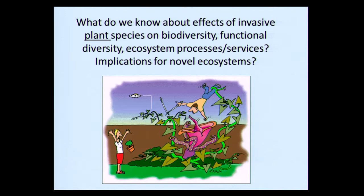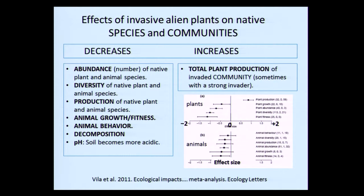I want to talk now about the effect of invasive plant species on biodiversity and implications for novel ecosystems. Studies show that as alien plants increase, we have decreases in the abundance and diversity of native plant and animal species, decreases in animal growth and fitness, changes in animal behavior, and decomposition may decrease with soil becoming more acidic. However, total primary production may increase, often due to one dominant invader that grows aggressively and produces more biomass. These results come from meta-analyses looking at dozens to hundreds of studies.